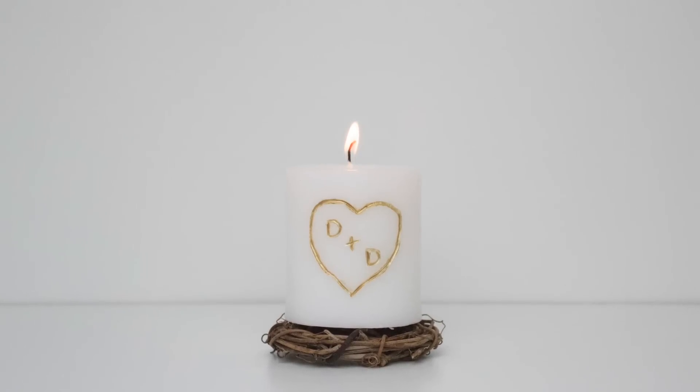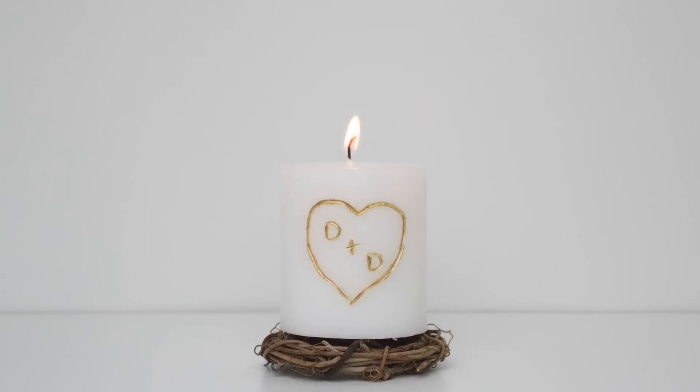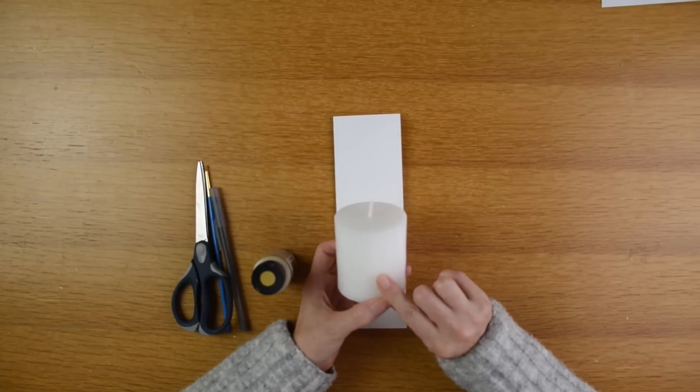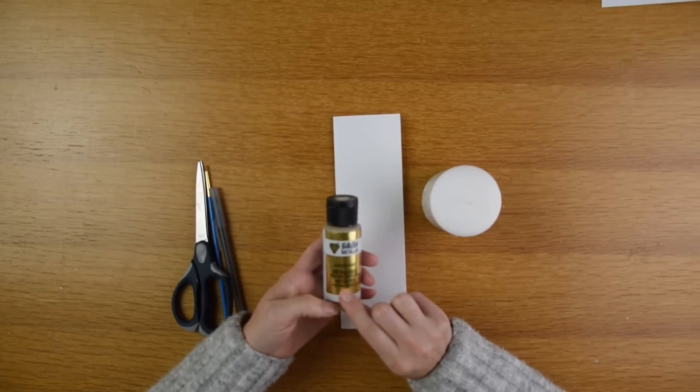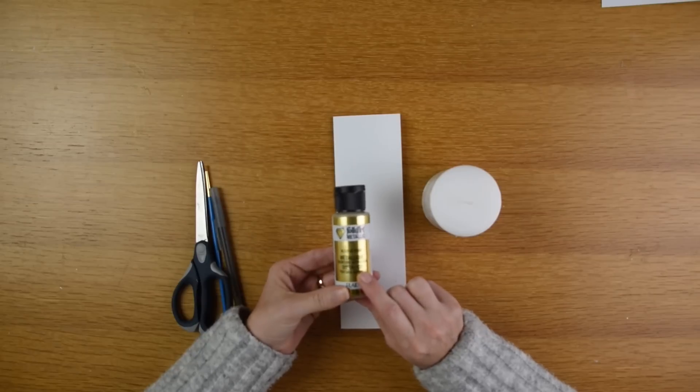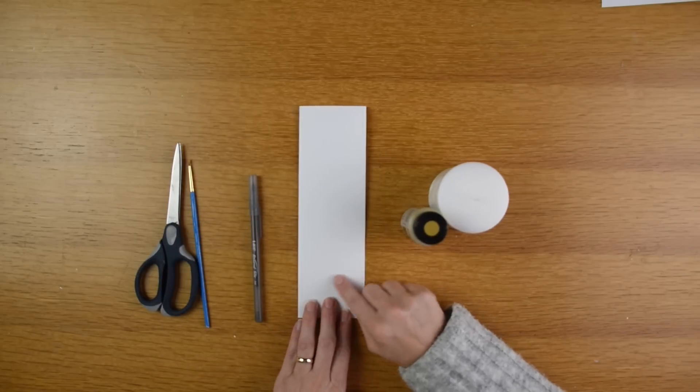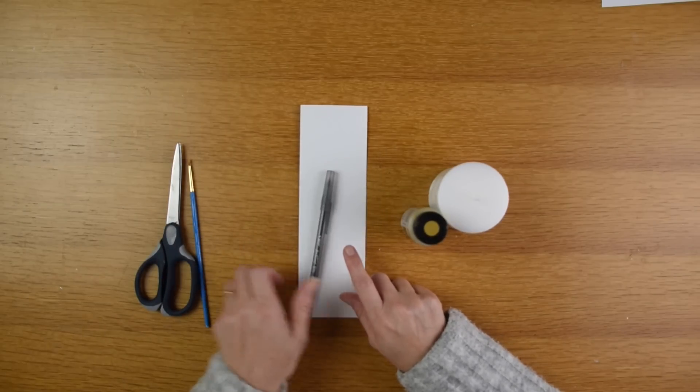Next up is this carved candle. I really love this as well. I'm using a white candle from the Dollar Tree. Also I'm going to be using some gold metallic paint. This is acrylic paint by Folk Art and I'm also going to be using some paintbrushes, a ballpoint pen, a piece of paper, and a pair of scissors.